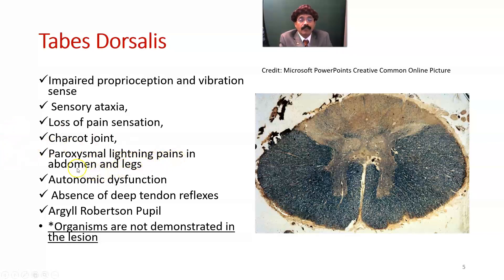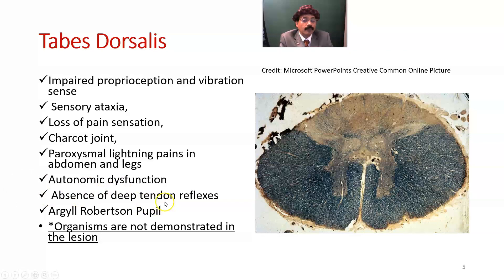There is absence of deep tendon reflexes like the knee reflex and the ankle reflex, and the Argyll Robertson light reflex is lost, but the accommodation reflex is preserved. In tabes dorsalis, organisms are not demonstrated in the lesion. If people want to read something — a near object — the accommodation reflex is still intact.